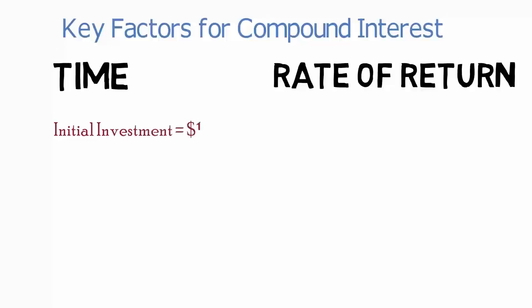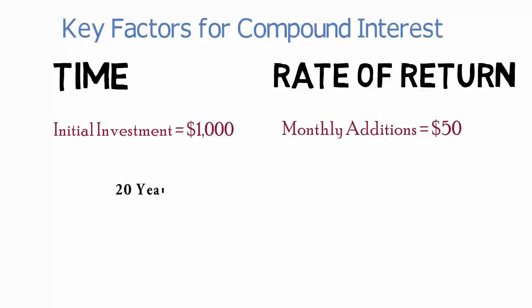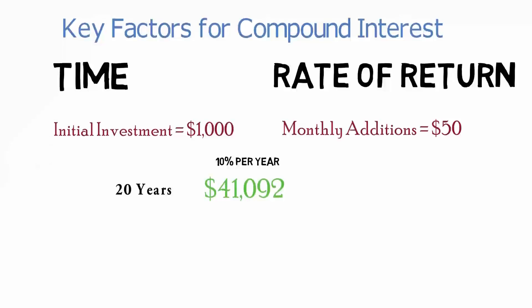Imagine you invested $1,000 today, and each month you are going to add $50 to your investment account. After 20 years, assuming that you reinvest everything you earn to take advantage of the power of compounding, your account is now going to be worth a bit over $41,000. To demonstrate the impact of time, what happens if you doubled that time? Instead of 20 years, you did 40 years. What does the $41,000 turn into? Well, instead of doubling to $82,000, it climbs to about $310,000.